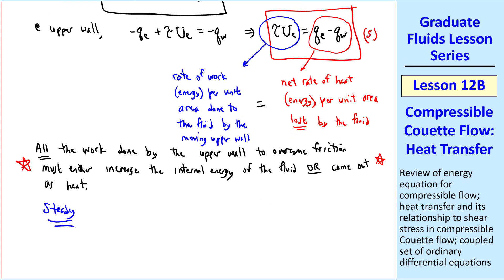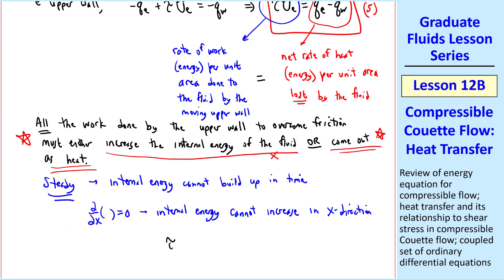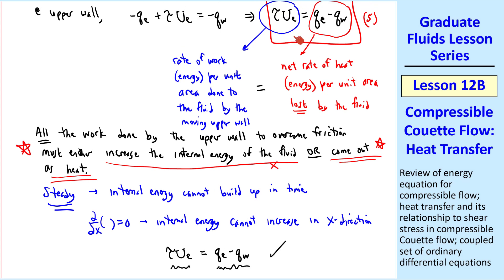This is a nice physical summary of what's going on in this equation for our compressible Couette flow. But here, the problem is steady. So internal energy cannot build up in time. Also, del del x of anything is 0. So internal energy cannot increase in the x direction. So this cannot happen. Therefore, all of the work that has been added has to come out as heat. All the work done at the top wall on the fluid, the left-hand side, must be transferred out of the fluid through the walls. That's our physical explanation for equation 5.